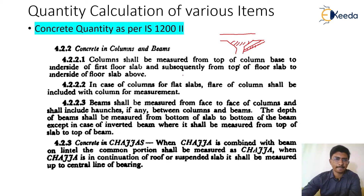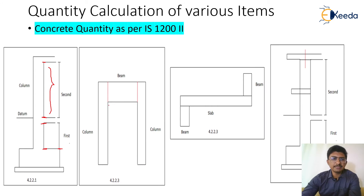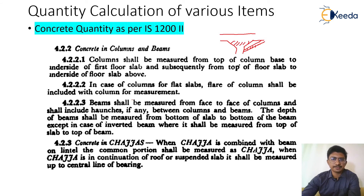The beam shall be measured from face to face of the columns, and shall include haunches, if any, in between the columns and the beams. So the clear span from the face of one column to the face of the other column is the length of the beam. Any flanges or additional supports provided are also included in the beam measurement.